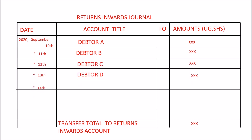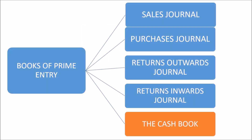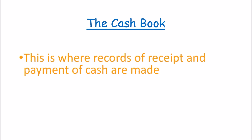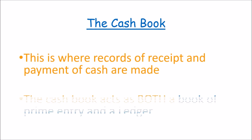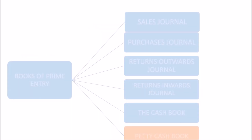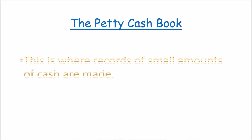Then we have the cash book, where records of receipt and payment of cash are made. The cash book doubles as the book of prime entry and also a ledger. We shall discuss the cash book in more detail in our upcoming sessions. There is also the petty cash book, which is used to record small amounts of cash.